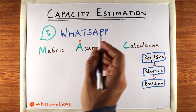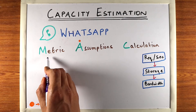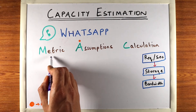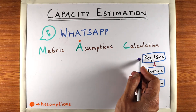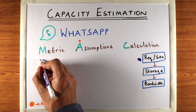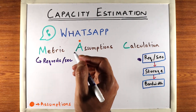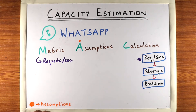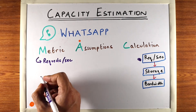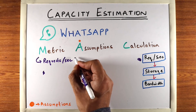Following our three-step process for capacity estimation, first you figure out which metric you need to calculate. In our case we start off with requests per second, and typically in something like WhatsApp, or in most user-facing applications, you want to figure out two kinds of requests: read requests and write requests.